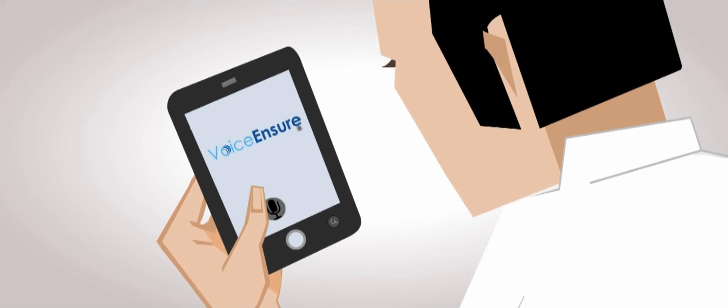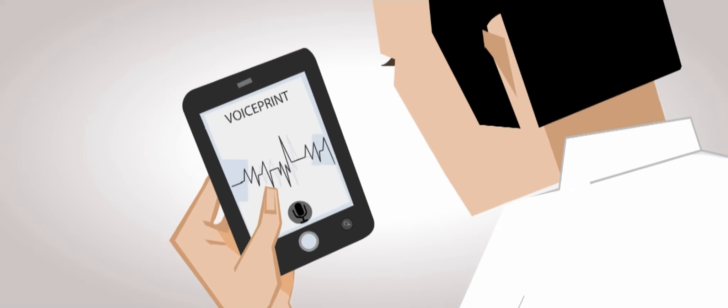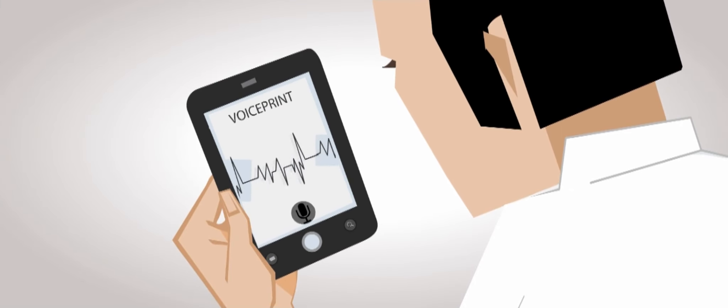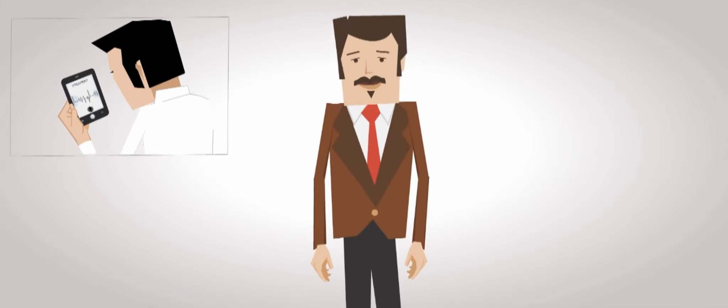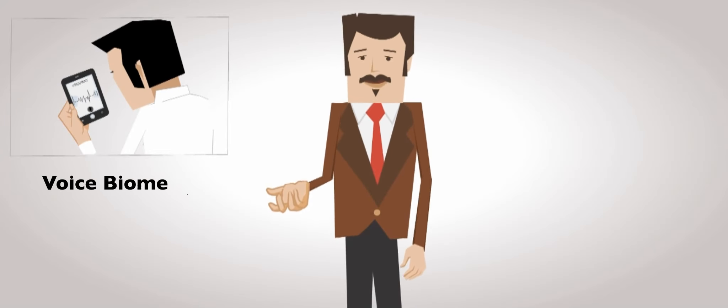Ever since Henderson Insurance Limited adopted Voice Ensure, customer onboarding has been a breeze. Hari simply has his customer speak a passphrase into his phone. Voice Ensure then takes the customer's voice and converts it into a unique digital identifier or voice print. This technology is called Voice Biometrics, a cutting edge authentication system which uses the uniqueness of an individual's voice to identify them.